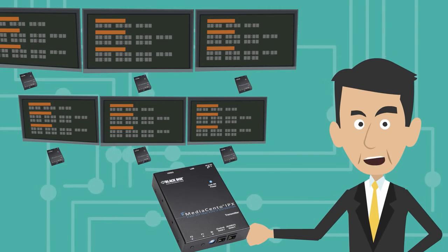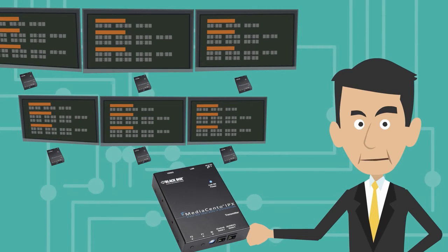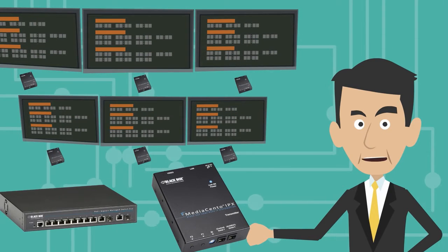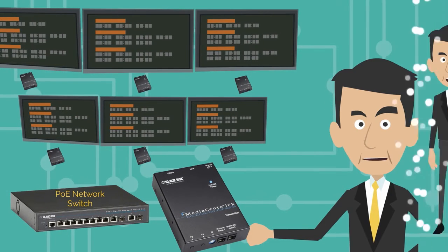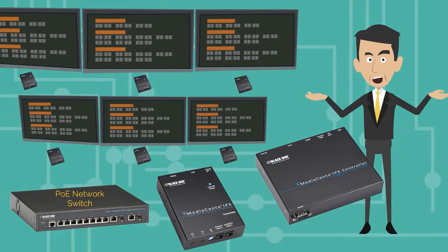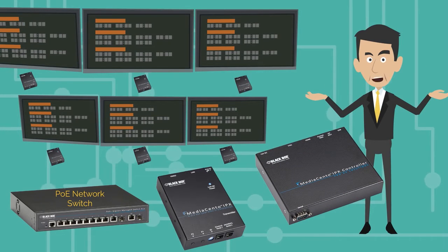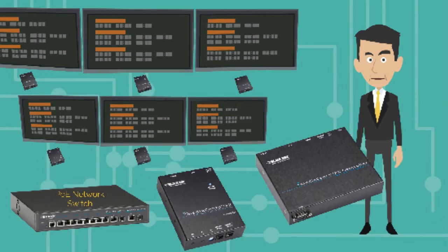You'll just need one transmitter for each source, and you don't even need a power supply since the devices are powered from the PoE network switch. Add in the MediaSento IPX controller and the system becomes an IP-based matrix switch and video wall controller.